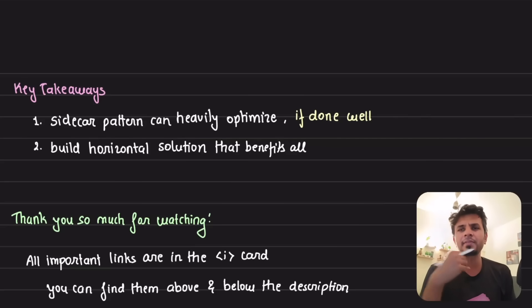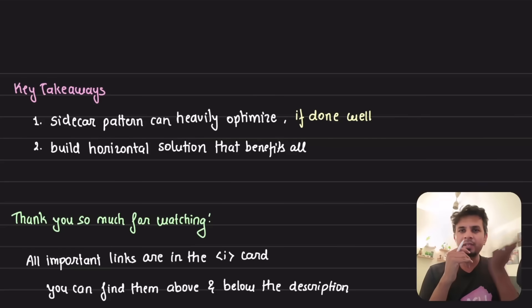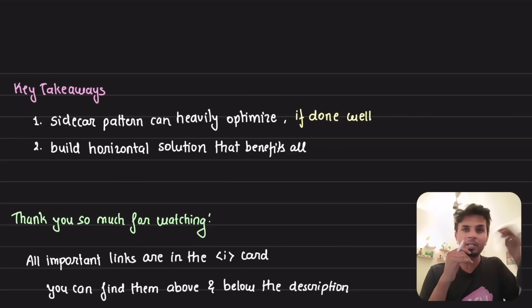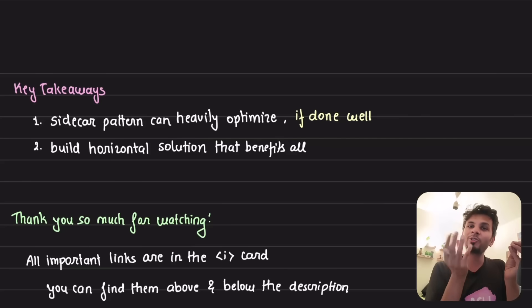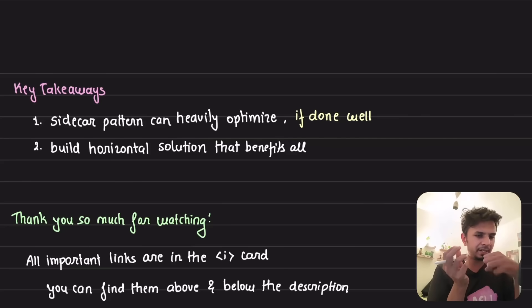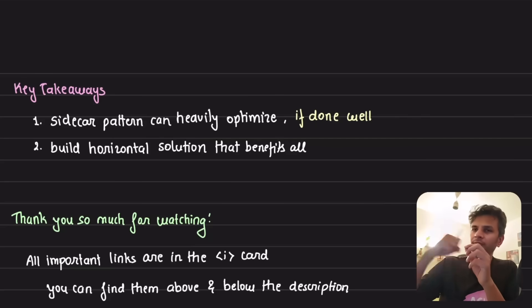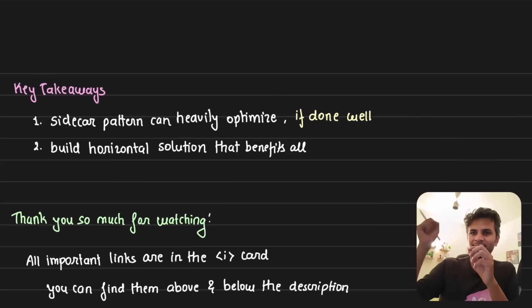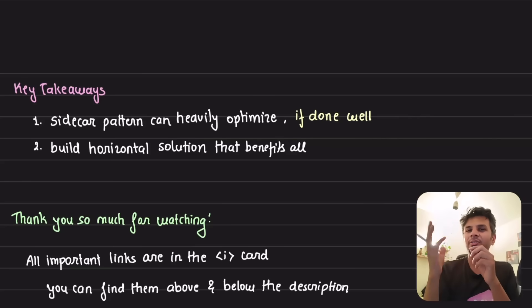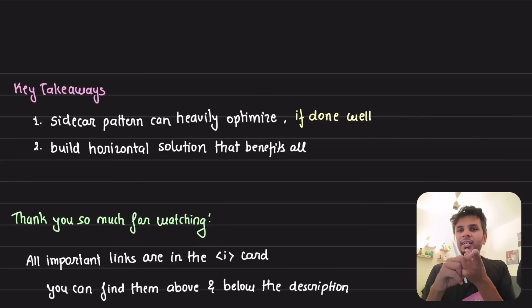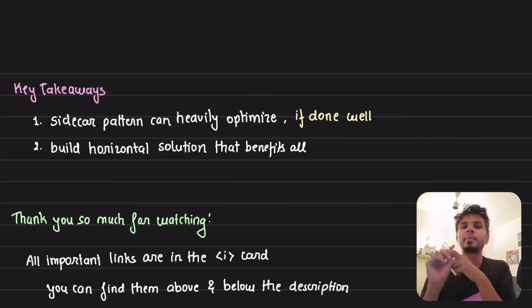Another example of sidecar: metrics and log collectors. If your web server generates logs or observability metrics, you might run a FluentD sidecar — you dump the metrics to disk, FluentD picks that up and emits it to the FluentD server. Metrics collectors, log collectors, and observability tools are typically implemented as sidecars.